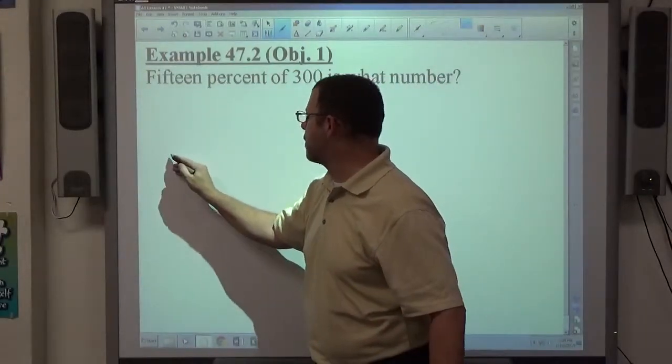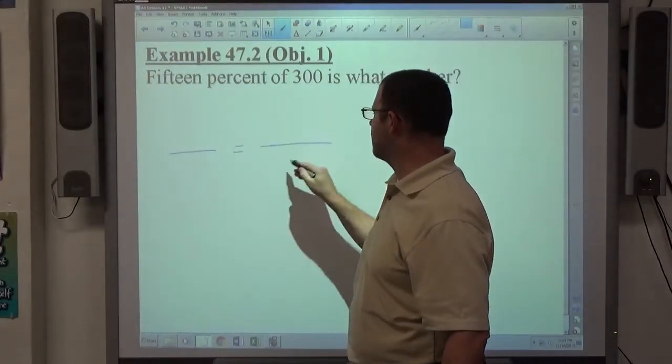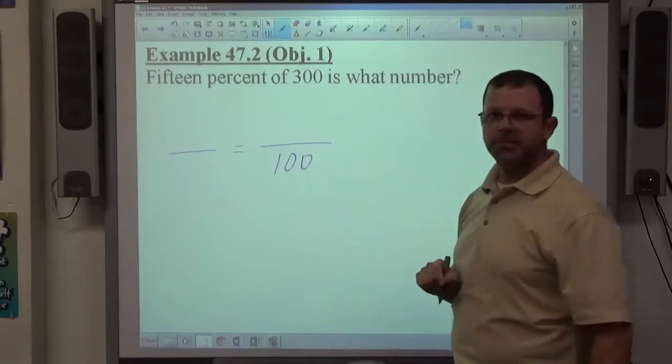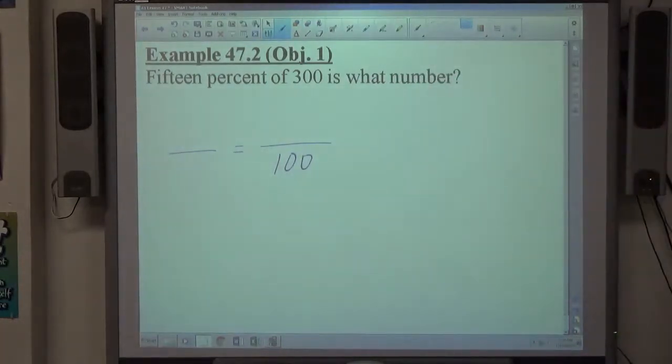As soon as I see this percent sentence problem, I'll go immediately to fraction bar equals fraction bar, 100 in the denominator. Always create the proportion first. It's always 100 every single time.